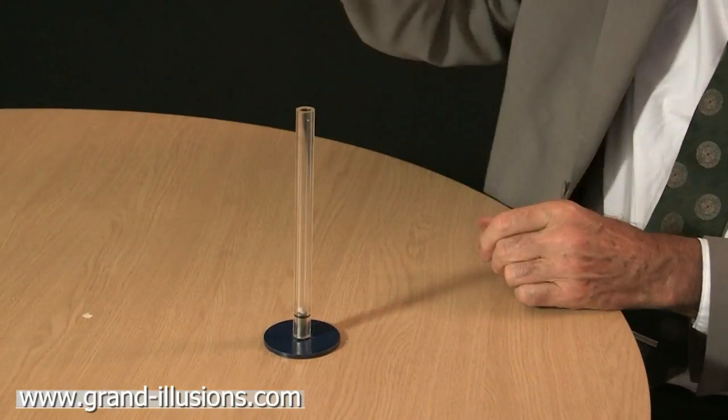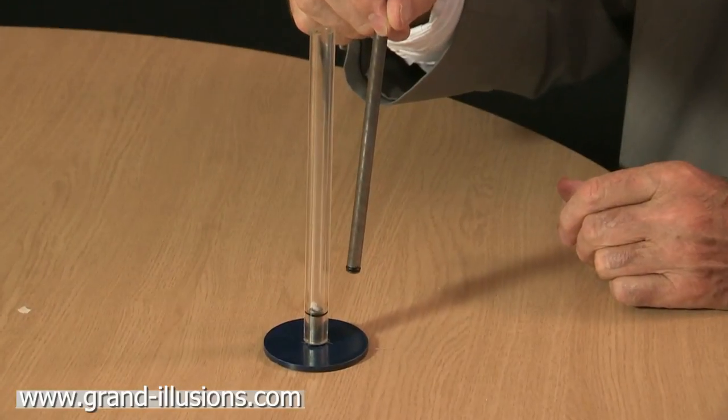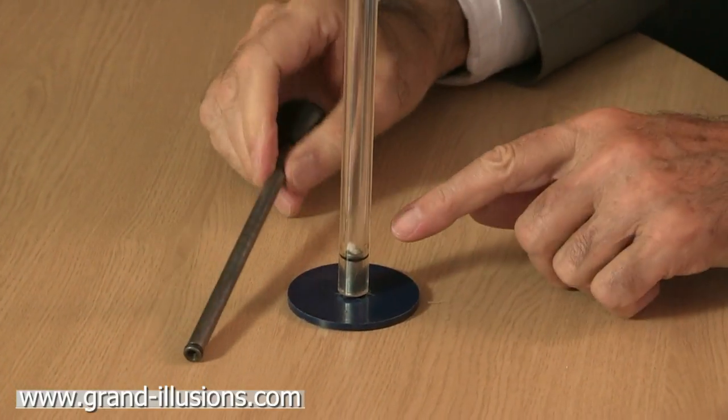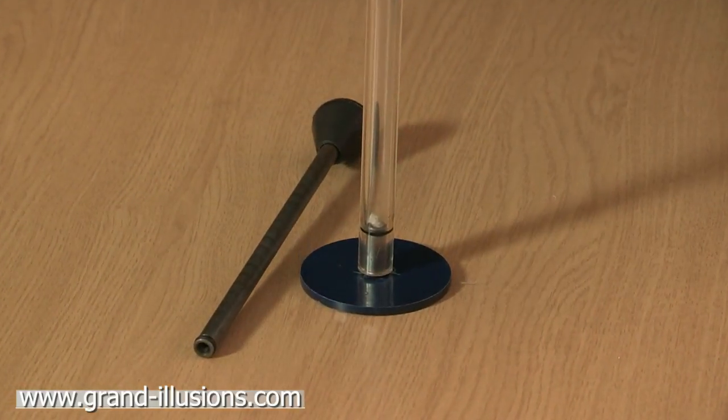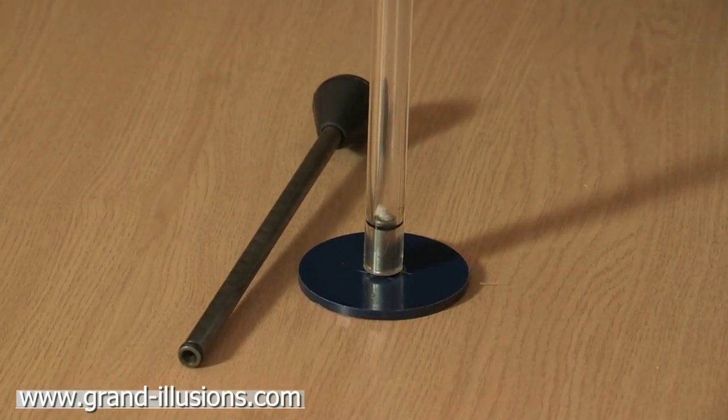And this plunger, it's got a nice grommet on it, is going to plunge down and heat up the air inside very, very rapidly, so the temperature in here increases up to the flash point of the cotton wool, and it'll set fire to it.